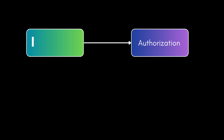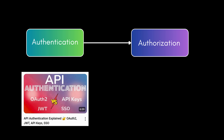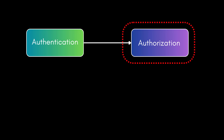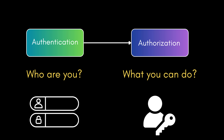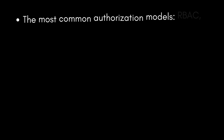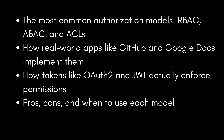This is a follow-up to the authentication video — if you haven't viewed it yet, you'll find the link in the description below. Now we're moving to the next step in security: authorization. A short reminder: authentication is who you are, while authorization is what you can do. In this video, we're going to break down the difference between authentication and authorization, the most common authorization models, how real-world apps like GitHub and Google Docs implement them, how tokens like OAuth2 and JWT enforce permissions, and when to use each model.